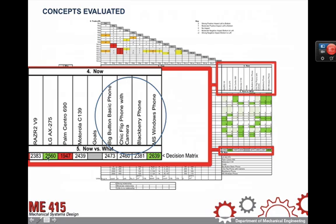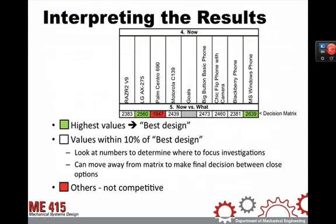With regard to our concepts, this one shows a great deal of promise because we're actually exceeding anything the competition does, and our remaining three concepts are within 10% of our best. The decision matrix will turn a cell red only if the value falls well below the 10% threshold of the best concept. So these three concepts are within 10% of the same value as our lead, and we may well want to look at combinations of these concepts to try to exceed even the one standing out above the others.